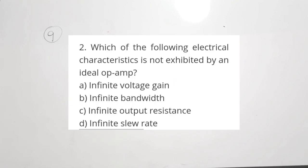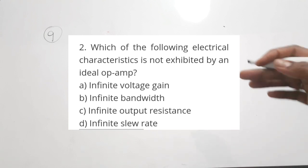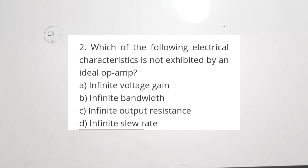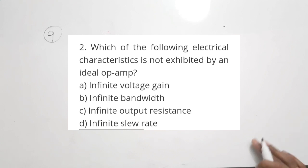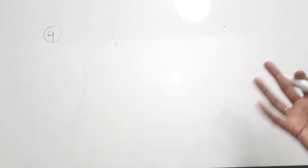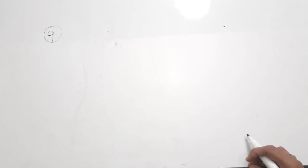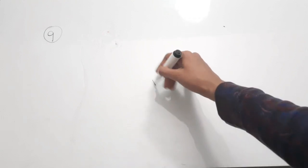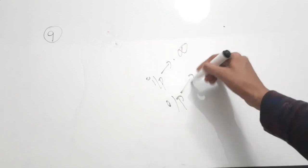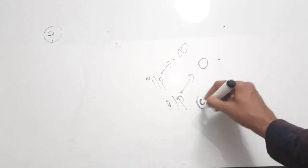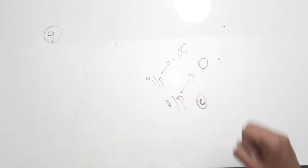The ninth question: which of the following is NOT exhibited by an ideal op-amp? Option A — infinite voltage gain — is a property of the ideal op-amp. Option B — infinite bandwidth — is also a property. Option C — infinite output resistance — is NOT correct, because the output resistance of an ideal op-amp is zero, not infinity. Note: input resistance is infinity, output resistance is zero. The correct answer is option C.